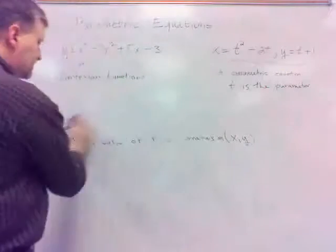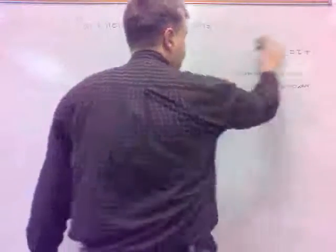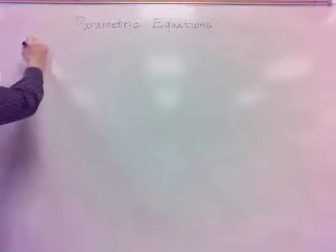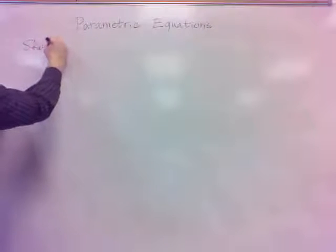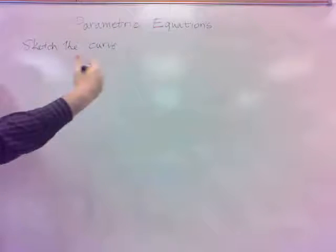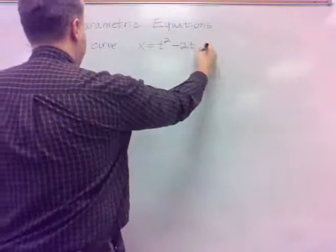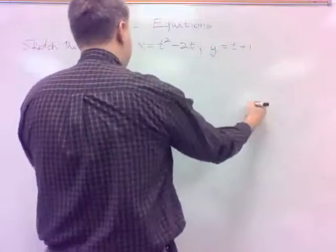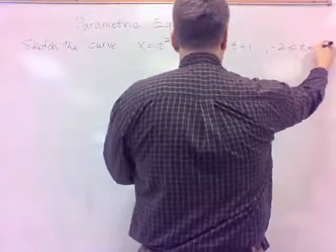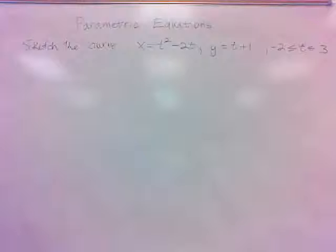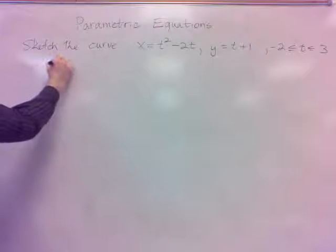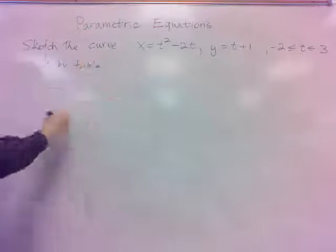Let's take a look at an example here. We'll just sketch some curves. Let's do this one, first of all, by hand, by table. Sketch the curve. X equals t squared minus 2t. Y equals t plus 1. And negative 2 is less than or equal to t, less than or equal to 3. We've got a boundary on our parameter there.